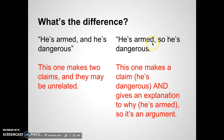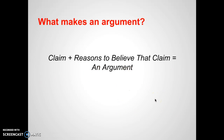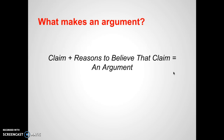Whereas 'he's armed, so he's dangerous' gives an explanation for why he is dangerous — it's because he is armed. That's what the 'so' is doing there. This one makes a claim ('he's dangerous') and gives an explanation ('he's armed'), so it's an argument. An argument is a claim plus reasons to believe that claim. When distinguishing a claim from an argument, you're looking for reasons to believe that claim.